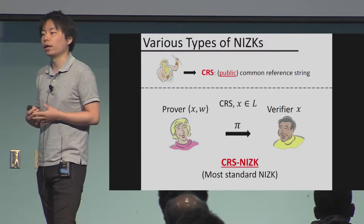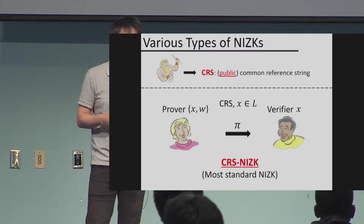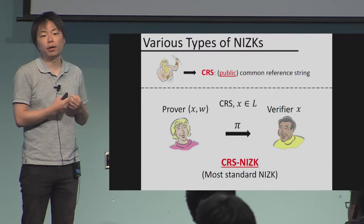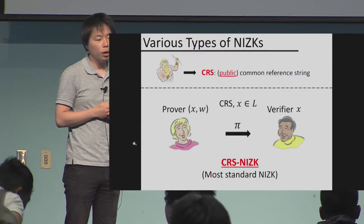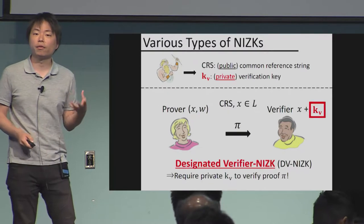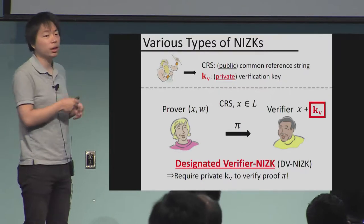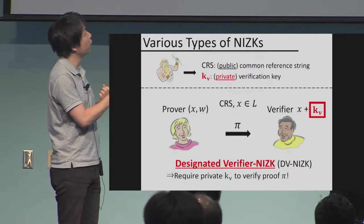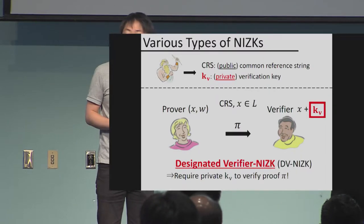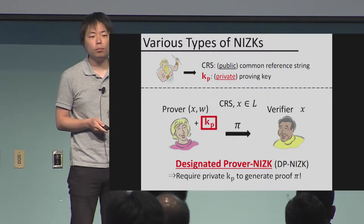We'll be considering various types of NIZKs. The most standard one is called a CRS NIZK, where a trusted setup constructs a public common reference string and any prover or verifier can participate using this CRS. We can consider a relaxation where the trusted setup provides a private verification key for a particular verifier — that's called a designated verifier zero-knowledge proof. In this model, anybody with a witness can be a prover, but only the designated verifier holding KV can verify.